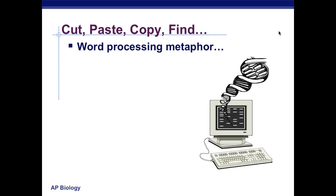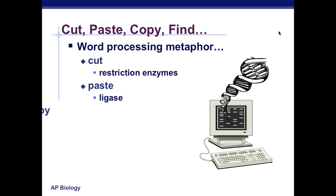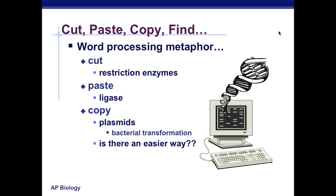We can use a word processing analogy to think about transformation. To cut a gene, you use restriction enzymes. To paste the gene in, you use ligase. For copying, we're looking at plasmids and bacterial transformation. They're still working and doing research. What have we found? We can insert genes into bacteria — bacterial transformation is the current research at this point, and it's still growing and developing.